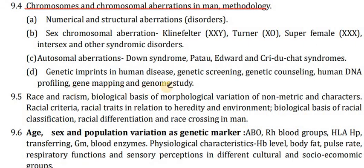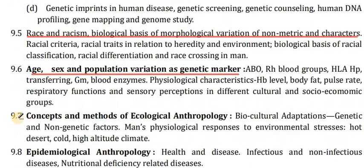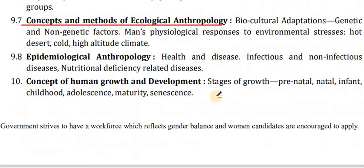Race and racism: biological basis of morphological variation, non-metric characters, racial criteria, racial traits in relation to heredity and environment, biological basis of racial classification, racial differentiation and race-crossing in man. Age, sex and population variation as genetic markers: ABO, Rh blood groups, HLA, haptoglobin, transferrin, Gm. Psychological characteristics, IQ levels, body fat, pulmonary and respiratory functions, sensory perceptions in different cultural and socioeconomic groups. Concepts and methods of ecological anthropology, biocultural adaptation, genetic and non-genetic factors, and man's physiological responses to environmental stresses — hot desert, cold and high-altitude climates. Epidemiological anthropology.